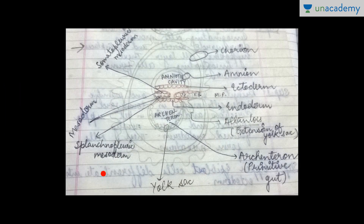This is the gastrula. The upper layer is ectoderm (upper epiblast cell layer), this is endoderm, and in between them is mesoderm — the upper is somatopleuric mesoderm and the lower is splanchnopleuric mesoderm. This is the archenteron, that is the primitive gut, formed during gastrulation, with obliteration of the blastocoele. This is the yolk sac, this is the amniotic cavity, this is the amnion, this is the chorion, this is the extra embryonic coelom, this is the embryonal stalk, and this is the allantois — an extension of the yolk sac.